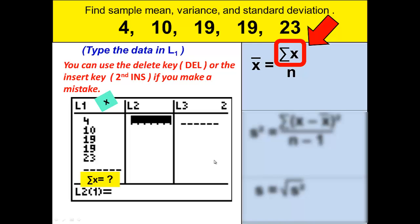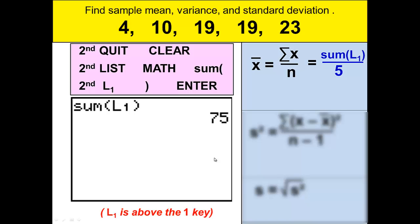So we need the sum of that first list. So we want the sum of list 1 divided by 5. The calculator has a command for that. Just like other things have an app for that, the calculator has a command for that. But it's buried in a menu. The first step is going to be to get out of the edit mode.